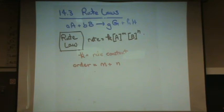Sometimes they will be, sometimes they won't be, and we'll see examples. But the sum of the exponents—and if there's more exponents you keep adding them in—is called the order of reaction.